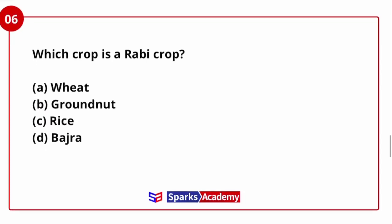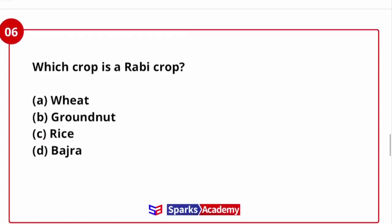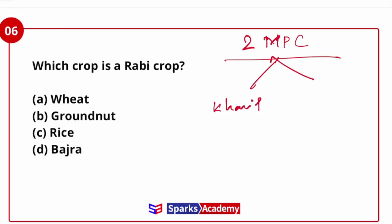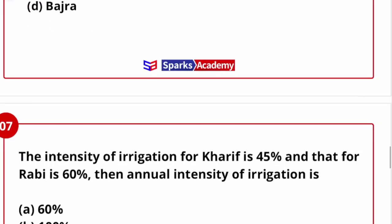Which crop is the Rabi crop — wheat, groundnut, rice, or vegetable? In India, there are two major principal crops: Kharif and Rabi. Kharif is the summer crop, and Rabi is the winter crop. Summer crops include rice, vegetables, groundnut, and jowar. Rabi crops are winter crops, and the answer is wheat. Other examples of Rabi crops are gram and potato. Kharif crops are eliminated from the options.